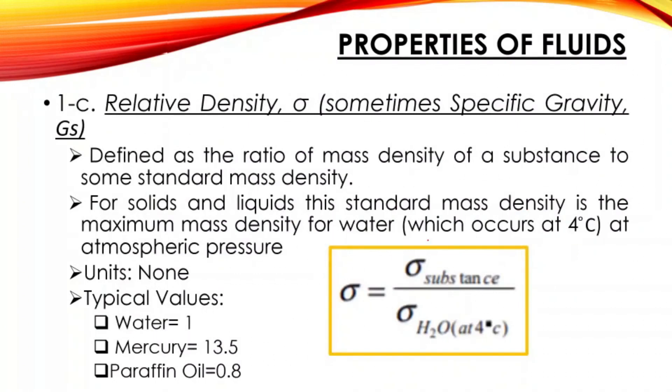For 1-c, we have relative density, or sometimes commonly called specific gravity, or Gs. Defined as the ratio of mass density of a substance to some standard mass density. What is this standard mass density? For solids and liquids, this standard mass density is the maximum mass density of water.